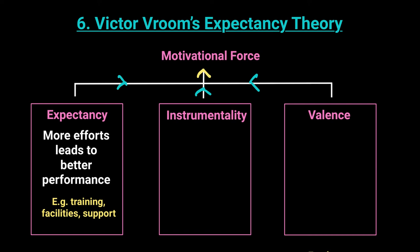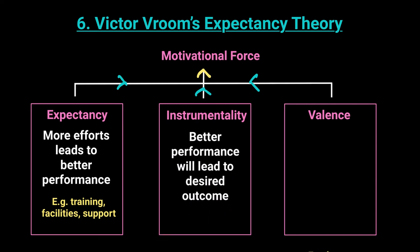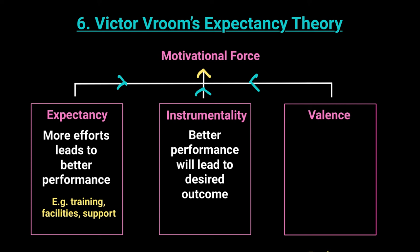The second part, instrumentality, states that you have to make it obvious to the worker that better performance will get them the pleasure they desire. The desired outcome could be money, recognition, a corner office, a company car, club membership - whatever one desires. The business must make the connection in the worker's mind that until they have better performance, they won't get the desired result - the bonuses or promotions they want. The business plays a part, and the worker does their part in order to get their desired outcome, whether money or something else.